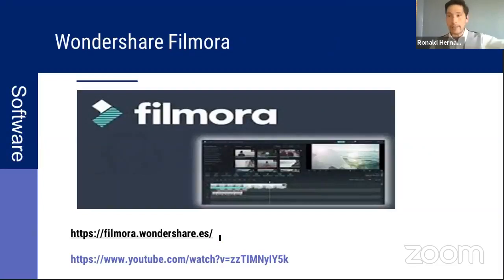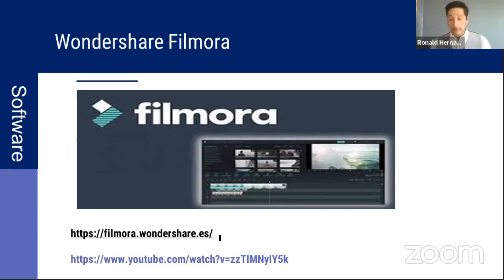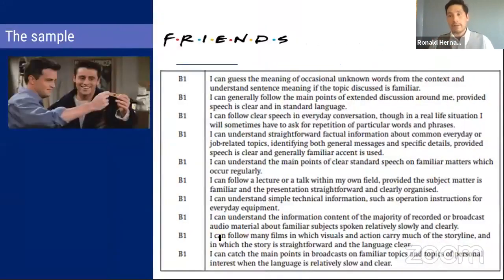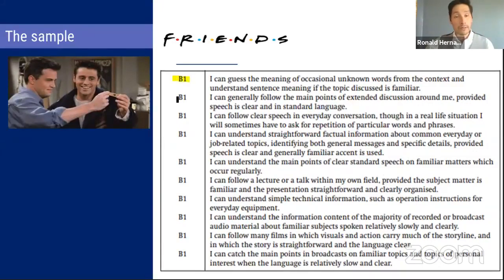How do we add captions to our videos? One free software you can use is Wondershare Filmora, which you can download for free. If you think you'll struggle with it, our suggestion — from our own experience — is to go to YouTube and find tutorials. There are many good ones that teach you not only how to trim videos — sometimes we only need a two-minute section of a longer video — but also how to add captions. The sample we'll show today in this workshop is a one-minute video from the series Friends, focused on the B2 level according to the CEFR.